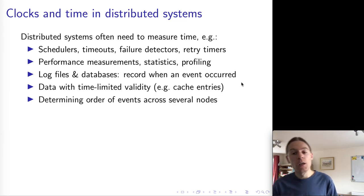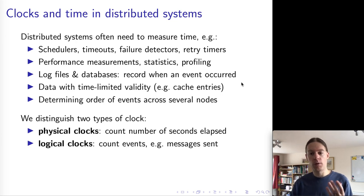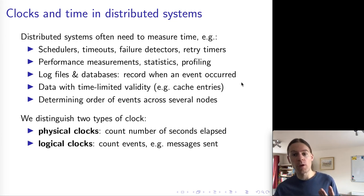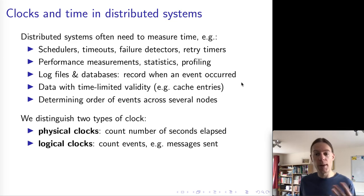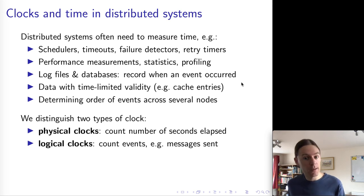And then finally, we use time measurements in order to determine in a distributed system in which order certain events occurred. And we'll talk about that more later in this lecture. So there are two types of clock that we encounter in distributed systems. And we distinguish them as physical and logical clocks. Physical clocks are the type of clocks that you know from everyday usage. They count the number of seconds that have elapsed. They tell you what time of day it is and what date it is. And that's the type of clock that we're talking about in this lecture. Logical clocks I will come to in the next lecture.